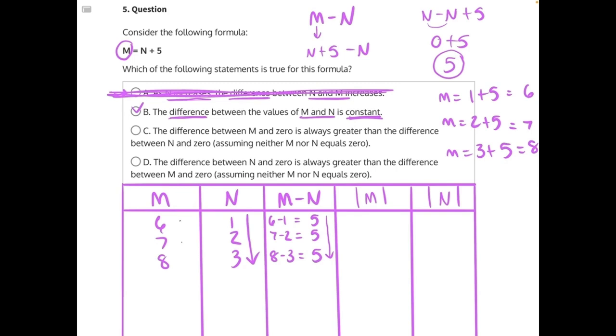If we were to take the absolute value of these three values of M, 6, 7, and 8, we would also get 6, 7, and 8. If we were to take the absolute value of these values of N, 1, 2, and 3, we would get 1, 2, and 3.